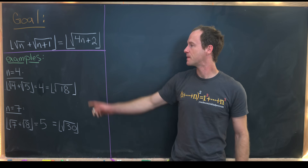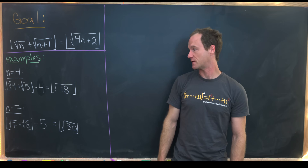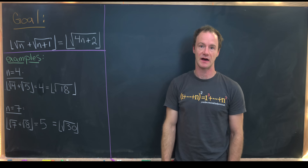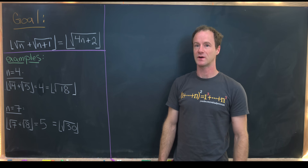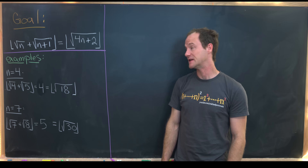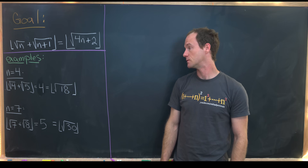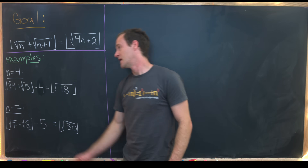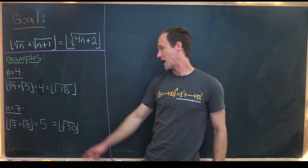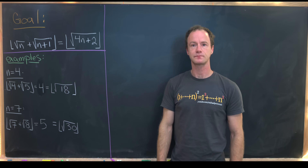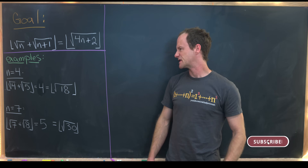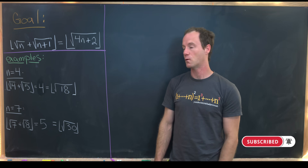Let's look at the n=4 example. We'll have the square root of 4 plus the square root of 5. The square root of 4 is exactly 2, and the square root of 5 is just a little bit bigger than 2. So we're adding something that is 2 and something between 2 and 3 — the floor of that is clearly 4. That's the same as the floor of the square root of 18, since √18 is bigger than 4 but less than 5.